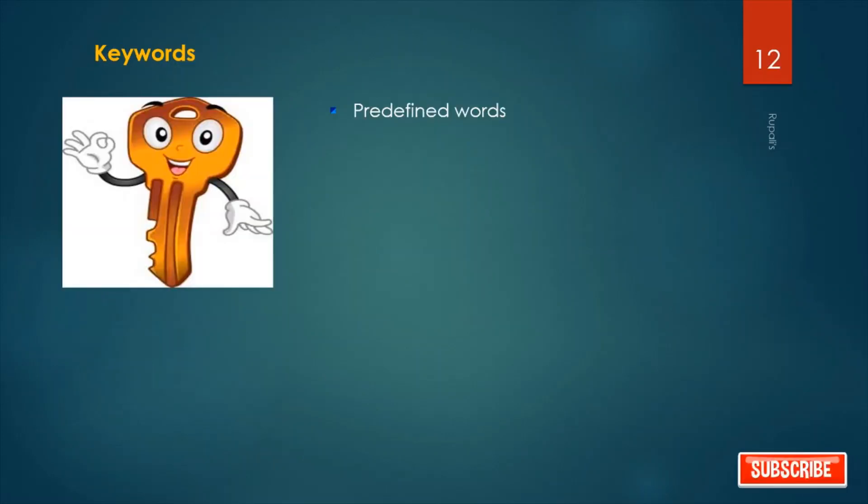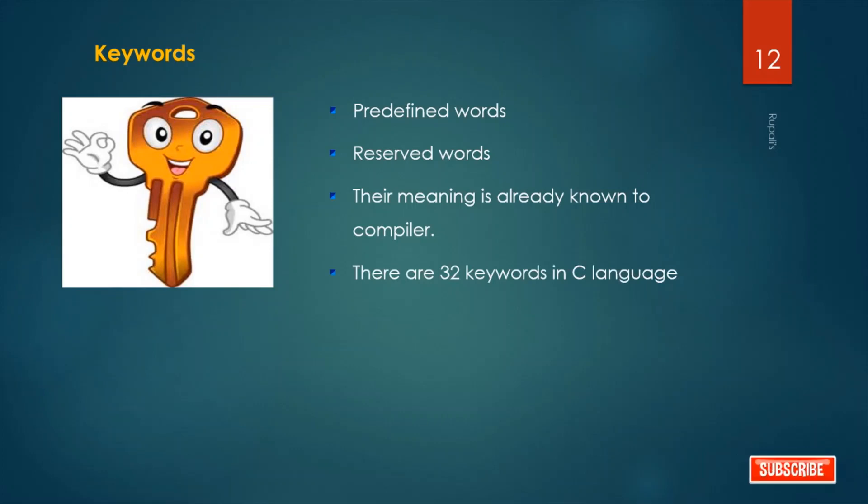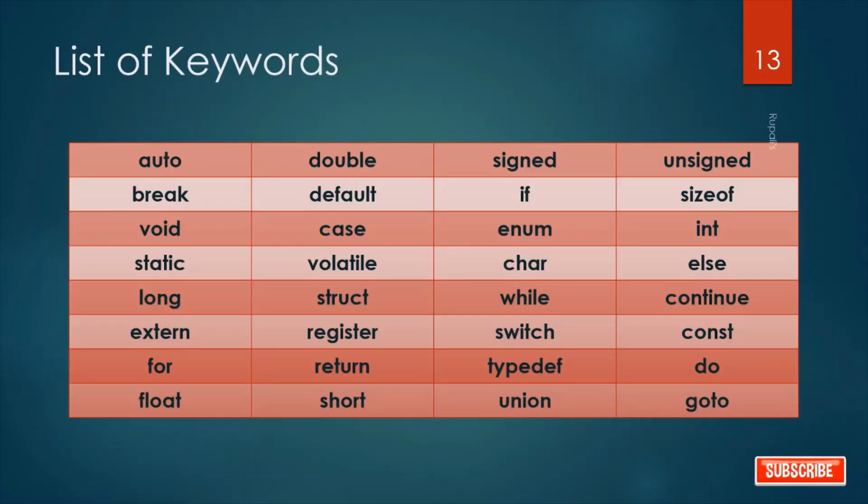Keywords are also called predefined words or reserved words. The meaning of keyword is already known to the compiler. In broad sense, we can say the meaning of keyword is already known to the computer. There are 32 keywords in C language. The list is given. We will use these keywords later in our C programming.